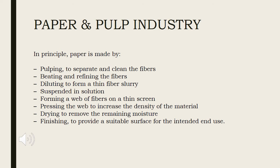Paper ranges up to about 160 or 220 grams per meter square, with heavier sheets regarded as board. The grammage above which paper is called board varies slightly between countries. In principle, paper is made by pulping, beating, diluting, suspending, forming a web, pressing the web, drying, and finishing.